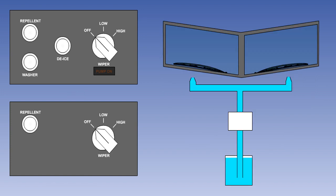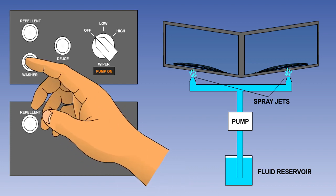The windscreen washer system sprays washer fluid onto the windscreen panels and is used in conjunction with the wipers to clean the windscreens. A typical system consists of a fluid reservoir, an electrically driven pump, and pipes feeding the fluid to spray jets below the windscreens. A single washer button controls the fluid for both screens.